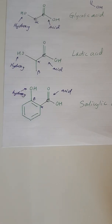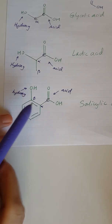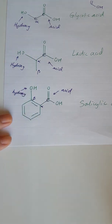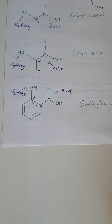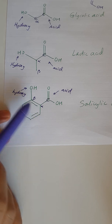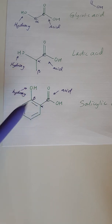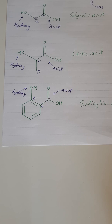Salicylic acid is called a beta hydroxy acid for this reason, but in reality when you have this benzene ring — this hexagon down here — it changes the properties dramatically and so this doesn't really act as a beta hydroxy acid, but in skincare we still call it a beta hydroxy acid.